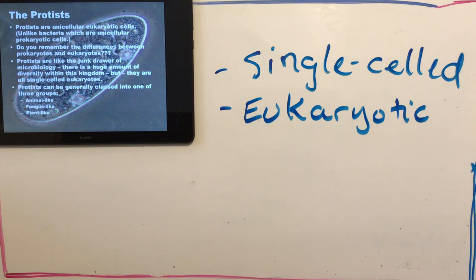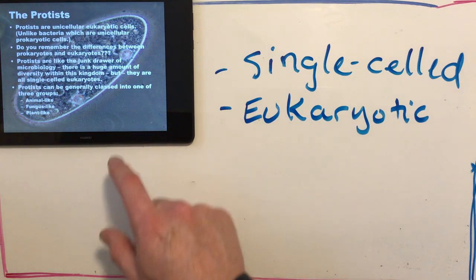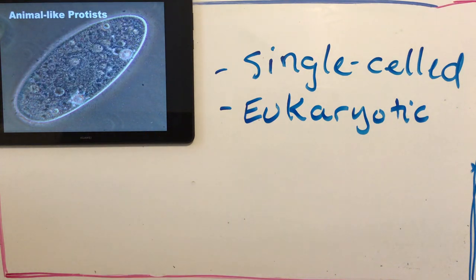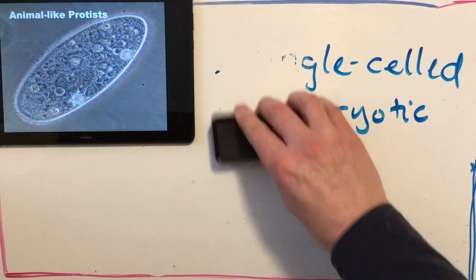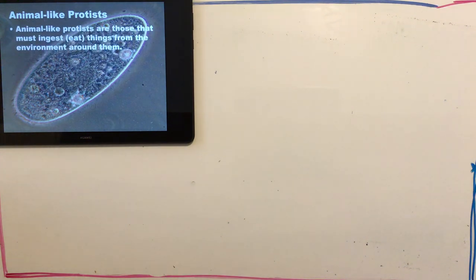Protists can be put into three different classes or general groups: animal-like, fungus-like, and plant-like. Animal-like protists are heterotrophs — they go out and eat other things. Fungus-like protists are decomposers — they eat dead and decaying things. And plant-like means they run photosynthesis, gaining energy from the sun.